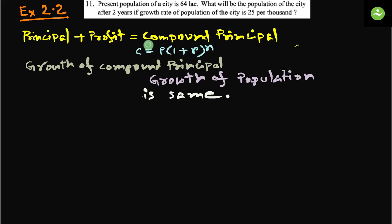And we know the formula to find a compound principal: C equals to P into (1 plus r) to the power n. Now growth of compound principal and growth of population is actually same, the calculation is same. And that is why we can apply the same formula to find the population anytime. So present population always we can find using the formula C equals to P into (1 plus r) to the power n.